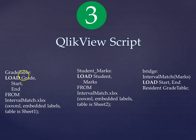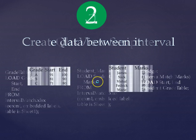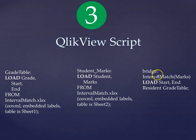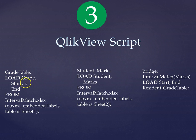Here is the QlikView script. The first table loaded has grade, start, and end date information. The second table has the student names and marks. The third table is an additional bridge table. What it does is use interval match: it takes the marks field from the student table, then loads the start and end fields from the grade table, and matches each mark value against those intervals — that's why it's called interval match.